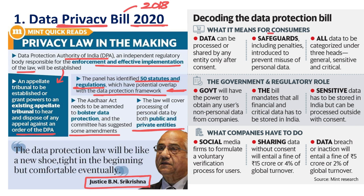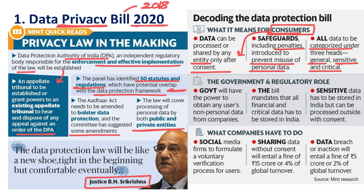From the consumer side, data can be processed or shared by any entity — either government or private — only after consent. Safeguards including penalties are provided to prevent misuse of personal data. All data is to be categorized under three heads: general data, sensitive data, and critical data. Consumer data will be used only after taking consent, so this is the protection from the consumer side.